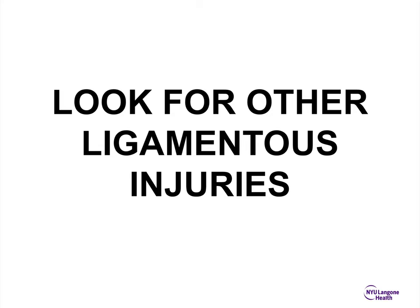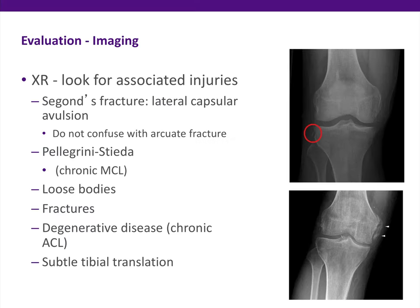When the ACL tears, there are very often other ligamentous injuries as well, particularly and most commonly the medial collateral ligament — sometimes the LCL as well as the PCL. Regarding imaging, we look for associated injuries, particularly the Segond fracture, which is an avulsion of a piece of bone off the anterolateral tibial plateau. Most often the lateral capsule will avulse this piece. You really should not confuse this with an arcuate fracture, which is an LCL avulsion injury of the proximal aspect of the fibular head. Segond fractures tend to have a more vertical fracture line and are relatively non-displaced. The Pellegrini-Stieda lesion is another bony injury seen in chronic MCL injury. You can look for loose bodies, fractures, degenerative disease, as well as subtle anterior tibial translation.